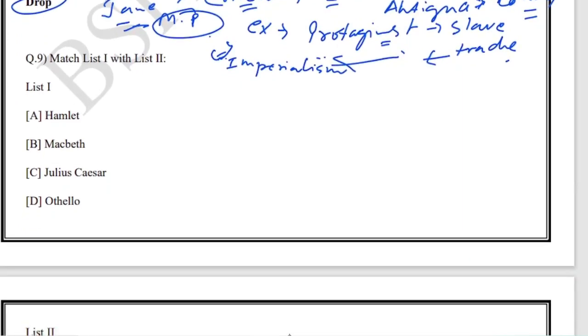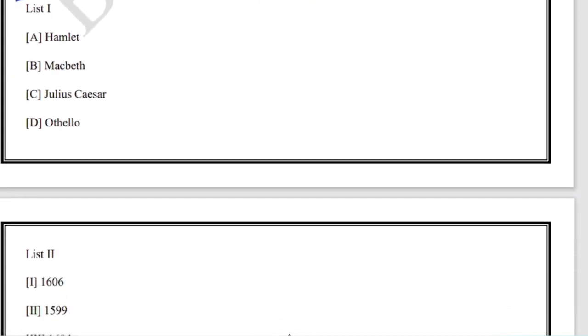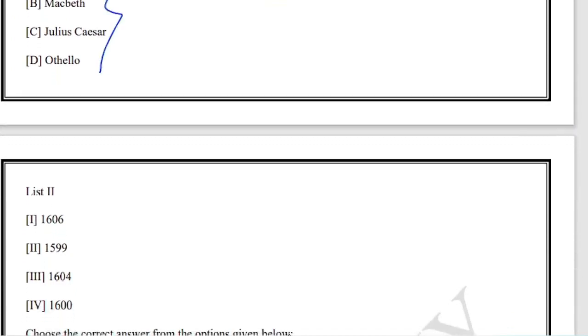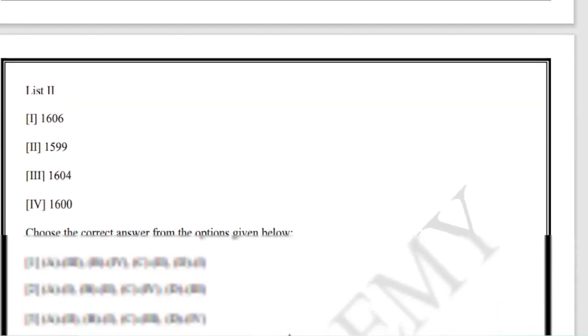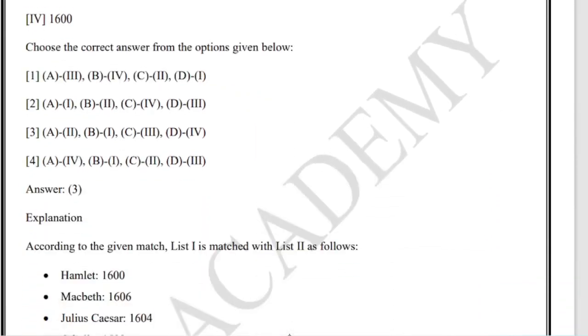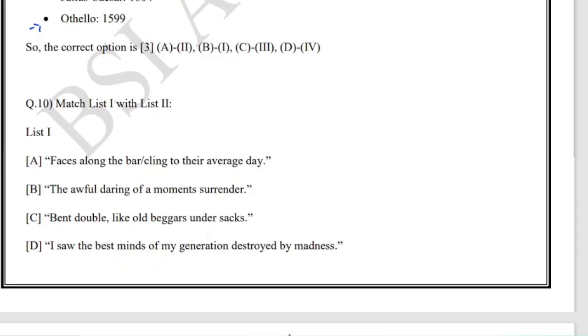Question nine matches works with their dates. First is Hamlet, then Macbeth, Julius Caesar, and Othello. These works are from William Shakespeare and got published or written in 1606, 1604, and 1599 for Othello.